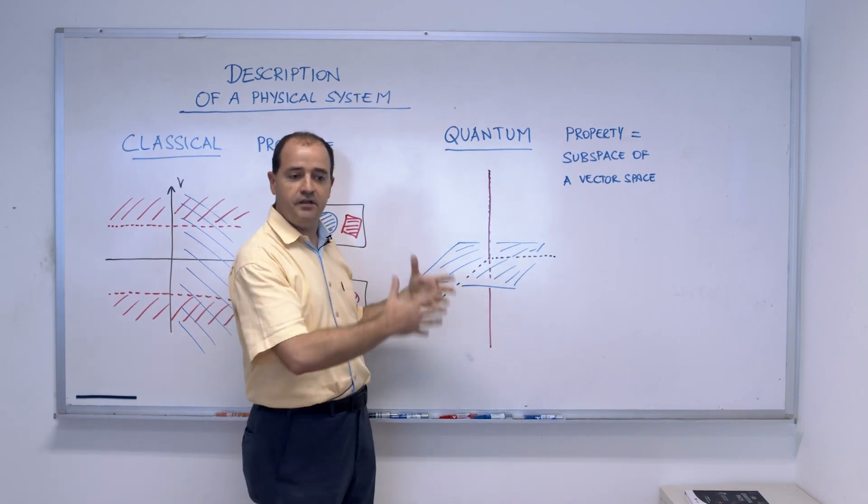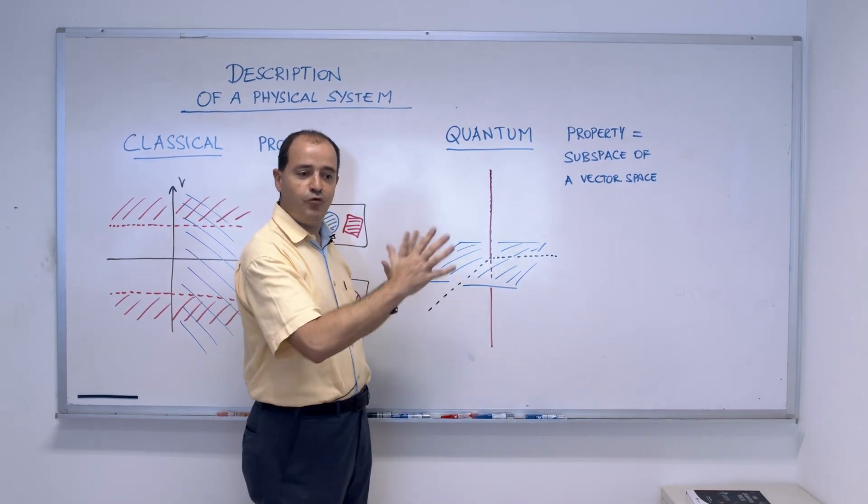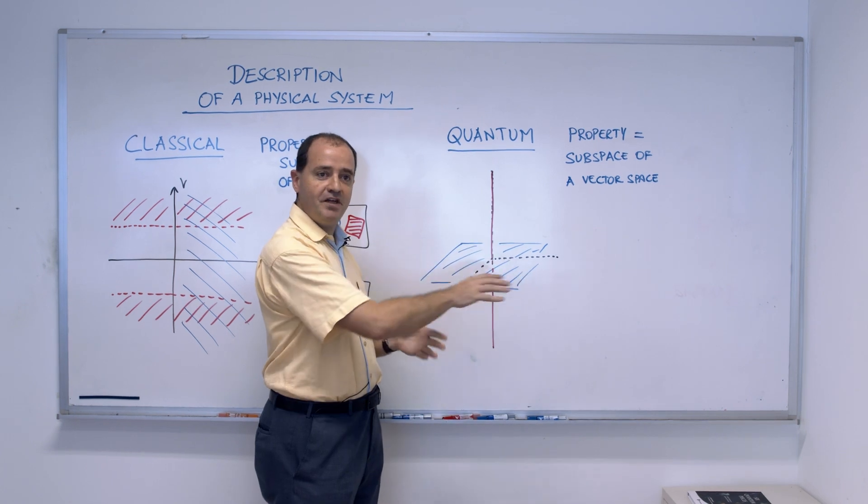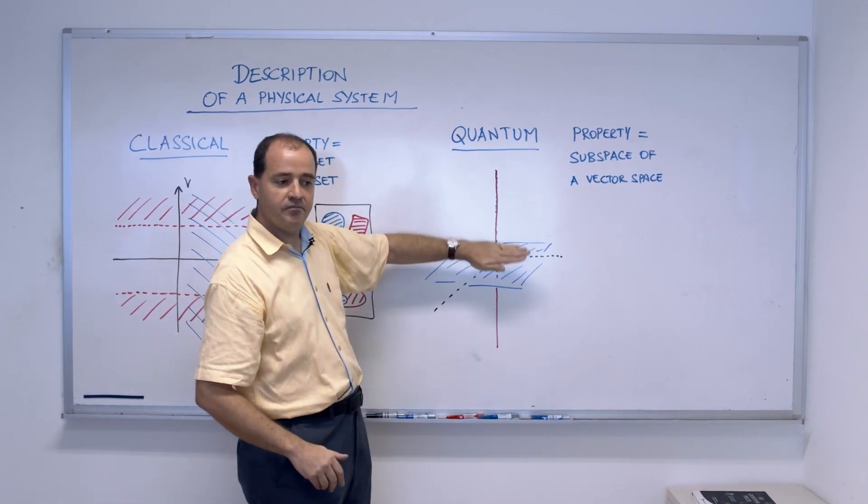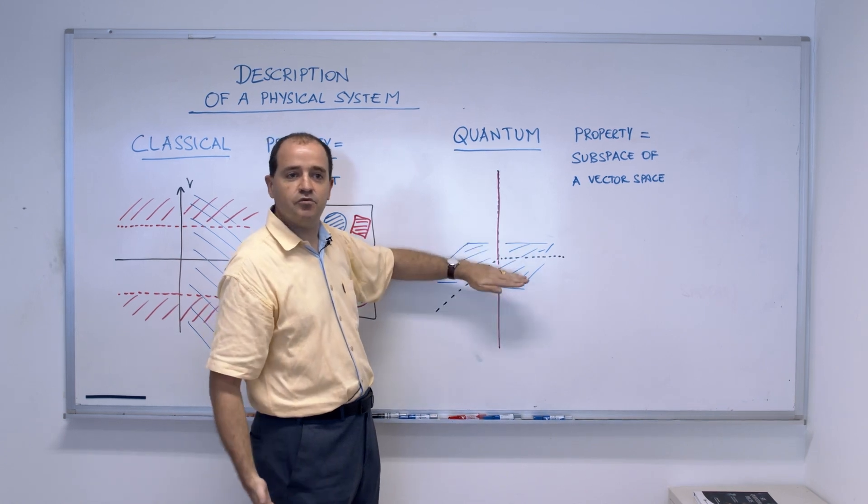Now what is the main difference? So here is a vector space, R3, the three-dimension of the volume. I try to draw in three-dimension. And here is one subspace, for instance, this plane, so it describes a property, whatever it is.